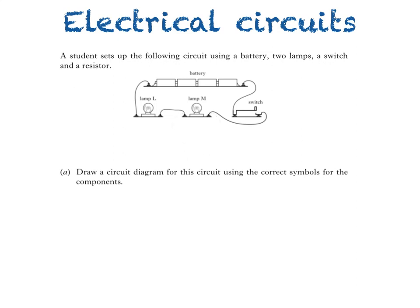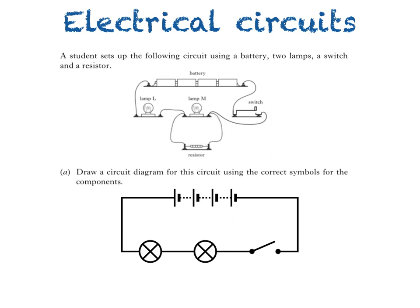First off, we have a battery containing four cells, then two lamps and a switch. Notice that I'm placing the components in roughly the same position as in the picture. All I have to do now is join them up with a line. And if you're doing this as well, then please use a ruler.